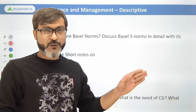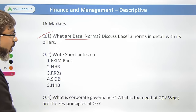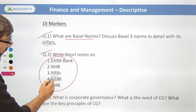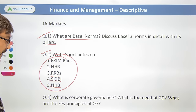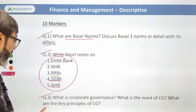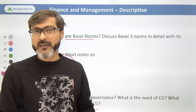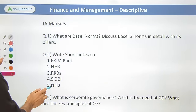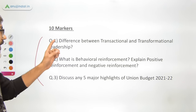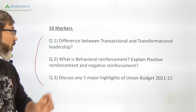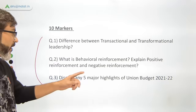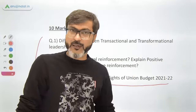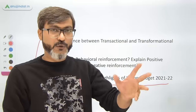Talking about FM descriptive for 2021 — since the pattern was changed for the first time, the questions were easy. Topics included: Basel norms, discussing Basel III norms in detail with its pillars; short notes on EXIM Bank, NHB, RRB, CDB; corporate governance — what it is, why it is needed, and its key principles. Management questions included: difference between transactional and transformational leadership, behavioral reinforcement with positive and negative reinforcement, and five major highlights of Budget 2021-22.